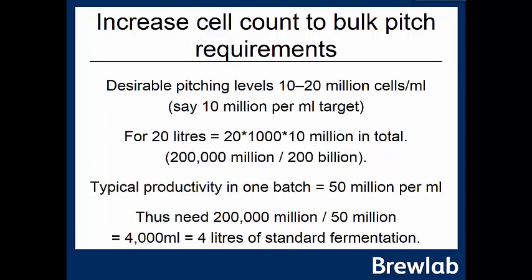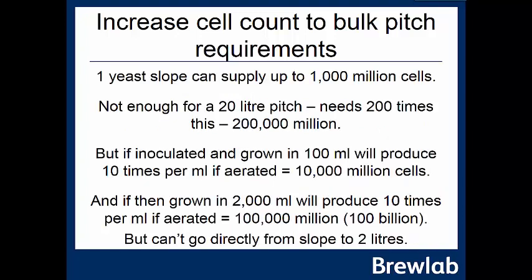A desirable pitching level is between ten and twenty million cells per millilitre — or one million cells per degree Plato or per four degrees gravity. For example, targeting ten million cells per millilitre for a 1040 wort gravity beer, in 20 litres we multiply ten million by twenty thousand millilitres, giving 200,000 million (200 billion) cells. Typical productivity in one fermentation batch is around 50 million cells per millilitre, so we'd need around four litres of standard fermentation.